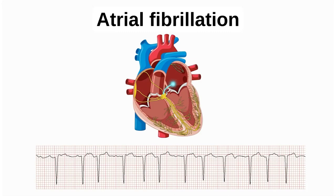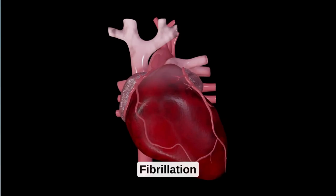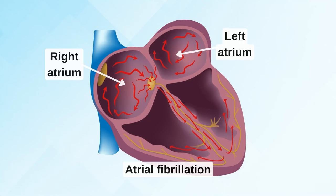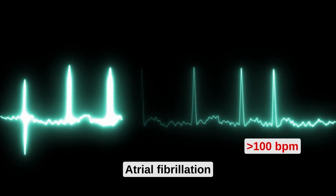Today we'll look at atrial fibrillation. When we have atrial fibrillation, this is a disease where the electricity of the heart is not working properly. We are dealing with a fibrillation — an over-exaggeration of electrical activity in one part of the heart called the atrium, therefore we call it atrial fibrillation. This over-reaction causes the heart to have an electrical frequency far higher than it should be.